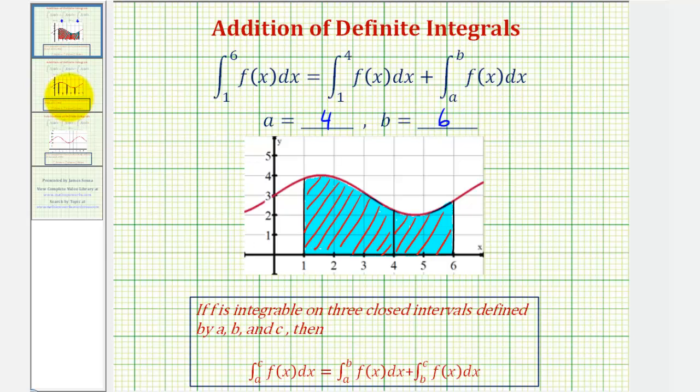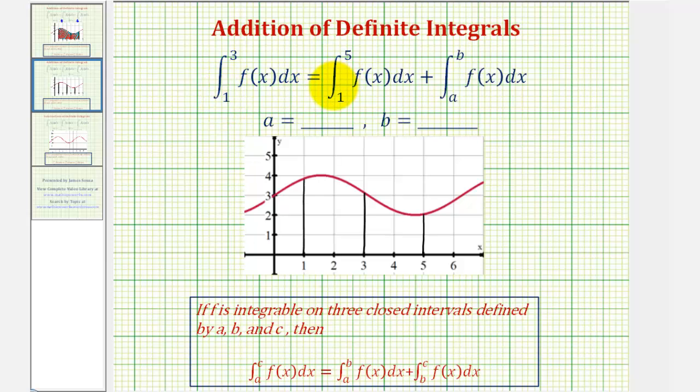Let's take a look at a second example. Here we have the integral of f of x from one to three must equal the definite integral of f of x from one to five plus the definite integral of f of x from a to b, and once again we want to find the value of a and b.